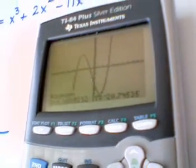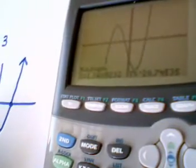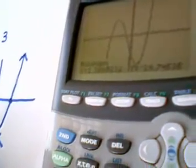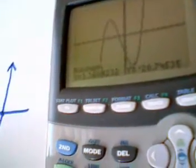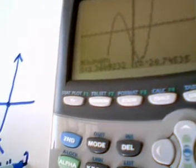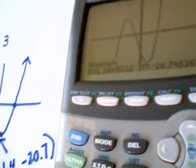And I come out with something like, oh, let's see. I'll call this maybe, I'll call this ordered pair approximately, what, 1.4, comma, negative 20.7.